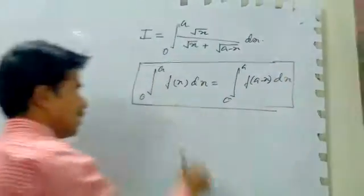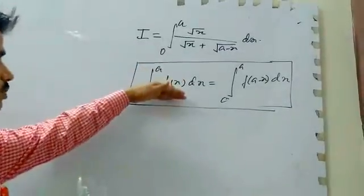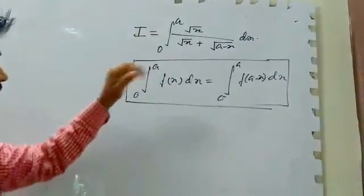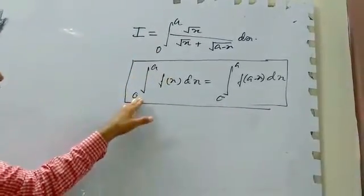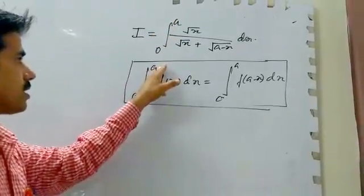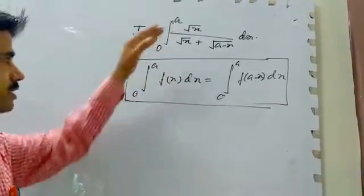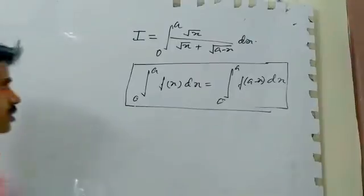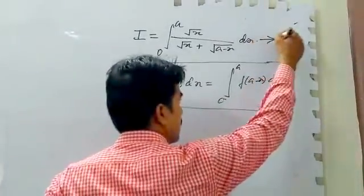We compare this property to this sum. Here, the lower limit is 0 and higher limit is A. That's why we can apply this property in these sums. So, let this be equation number 1.